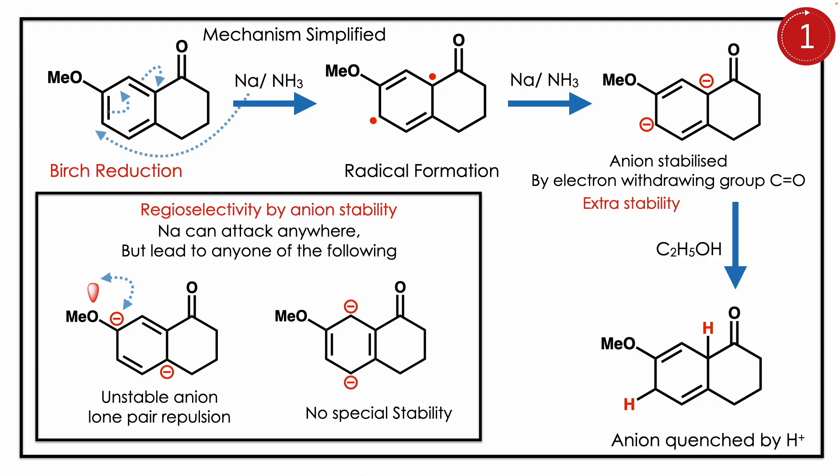The reduction happens, but you may wonder why there is regioselectivity — why not another type of product? Other regiochemical outcomes lead to a dianion near lone pair repulsion, which is high, so that is not favorable or lacks extra stability. Here, the major product is the anion formed near the carbonyl, because the carbonyl can stabilize the anion — this is extra stability by conjugation. The key concept: regioselectivity of Birch reduction is decided by anion stability.